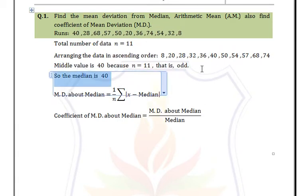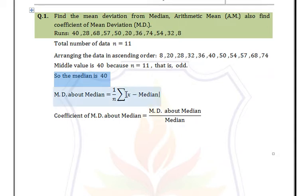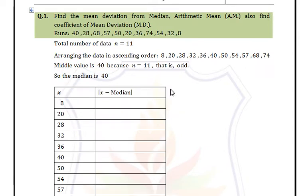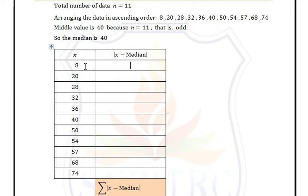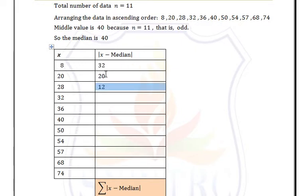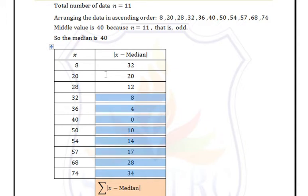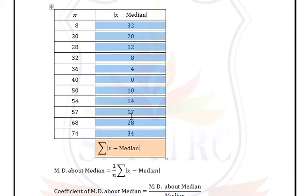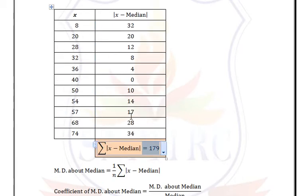Now we calculate |x - median| for each value. For x = 8: 8 - 40 = -32, but taking the absolute value gives 32. For x = 20: 20 - 40 = -20, and the absolute value is 20. Similarly we find the remaining absolute values.